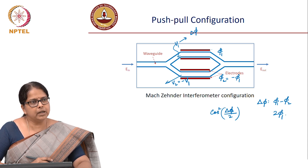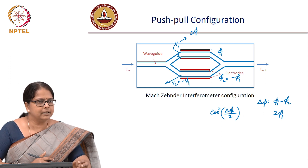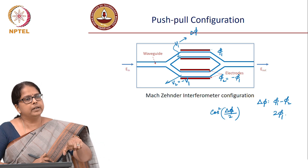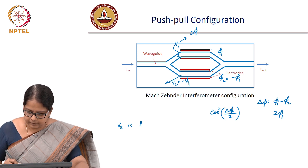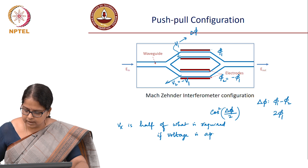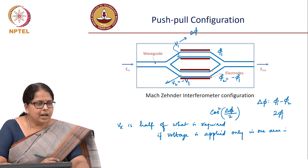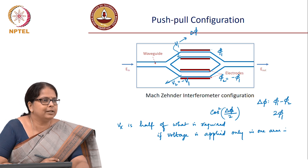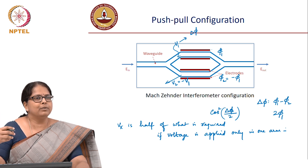That is the push-pull configuration. Typically all practical modulators run with push-pull configuration. You apply V1 and V2 — the theory does not change, it is just that the voltage required is only half. The Vπ becomes half when compared to a regular modulator in the case of a push-pull modulator. So if you see data sheets of modulators, you will see some with a Vπ of 6 or 6.5 volts, and others where the Vπ is 3 or 3.5 volts. You can immediately guess that the 6-volt is a single-electrode modulator, whereas the 3.5-volt is a push-pull modulator.